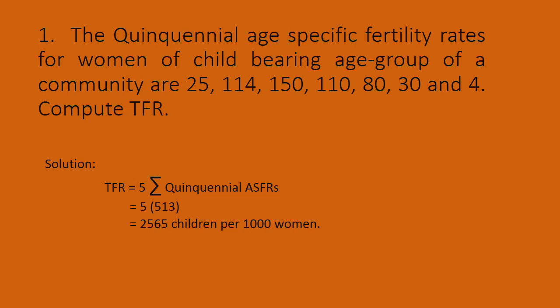There will be seven age groups in total: from 15 to 19 up to 45 to 49. For each age group, the fertility rates are: 25, 114, 150, and so on. To find the TFR, we apply the formula: TFR is equal to 5 into the summation of quinquennial age-specific fertility rates.